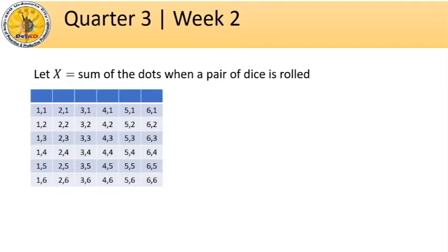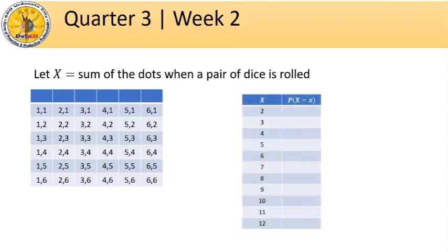The values of x range from 2 to 12 since those are the only possible sums of dots in the two dices. Based on our previous example, we can complete the table as follows.